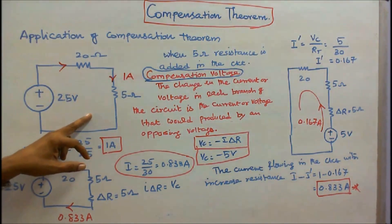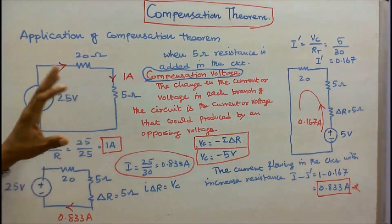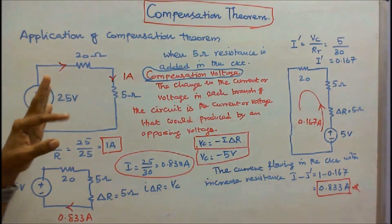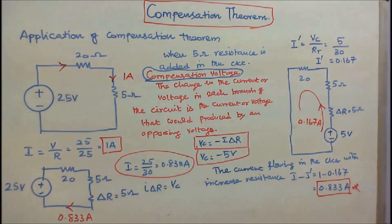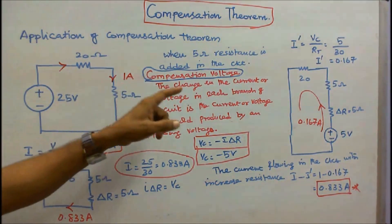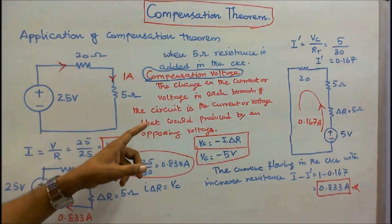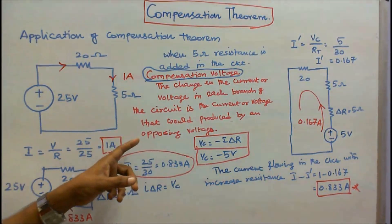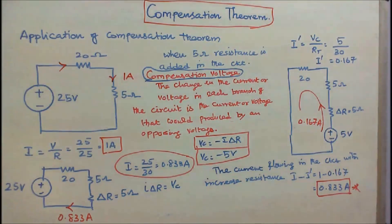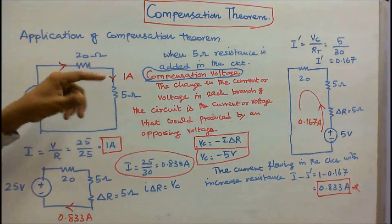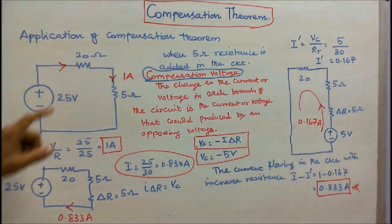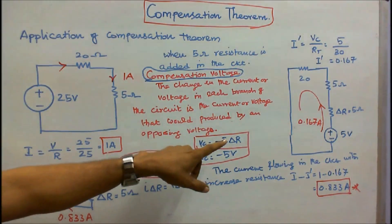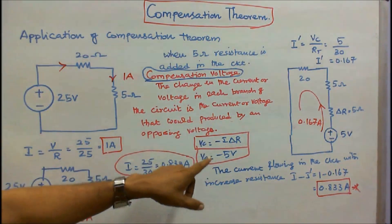Next, when I add a 5 ohm resistor in the circuit, what is the current? By using the compensation theorem, I have to find it. First step: I have to find the compensation voltage, which is the change in current or voltage in each branch of the circuit — the current or voltage that would be produced by the opposing voltage. The resistance I am going to add is 5, so delta R equals 5. Current I equals 1. Therefore, compensation voltage Vc equals minus I times delta R, which is minus 1 times 5, equal to minus 5 volts.